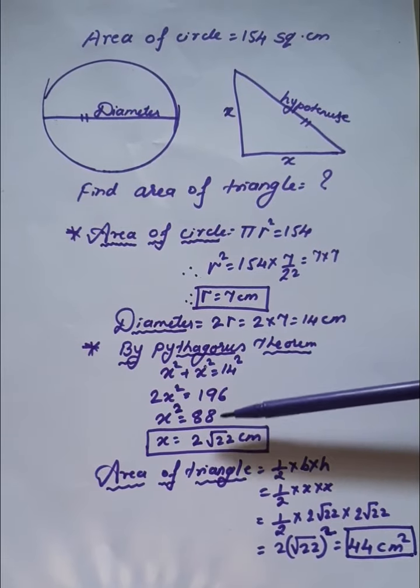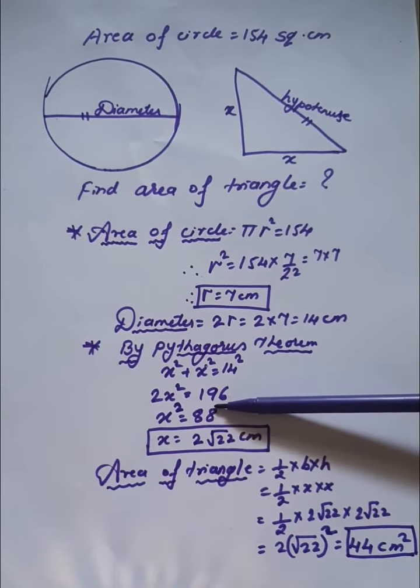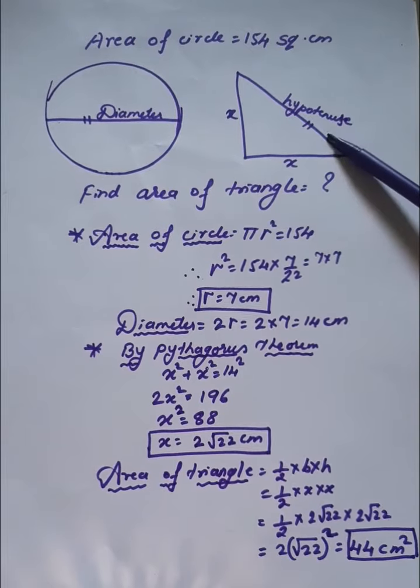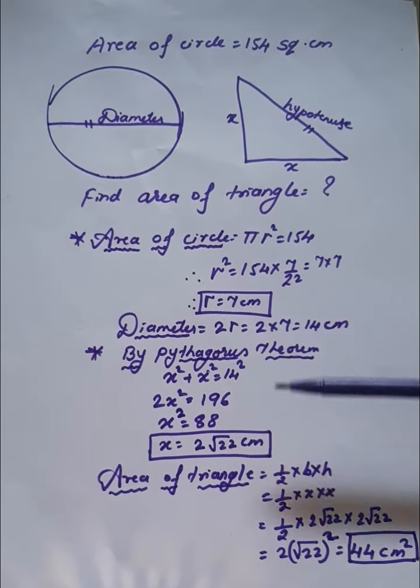When we take the square root of 88, x equals 2√22 centimeters. Now we need to find the area of the triangle using the formula: one-half times base times height. Since base and height are both x, we substitute 2√22.